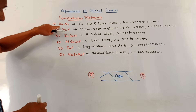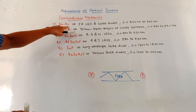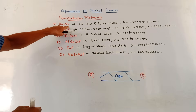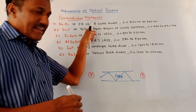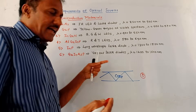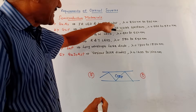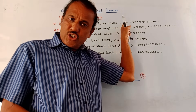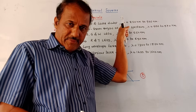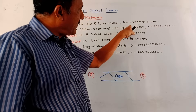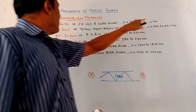The first material is gallium arsenide, GaAs. It is used for IR LED — that is infrared LED — and laser diodes. The wavelength range, denoted by lambda, is 850 to 940 nanometers.